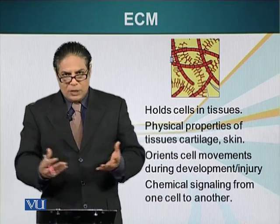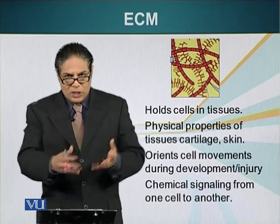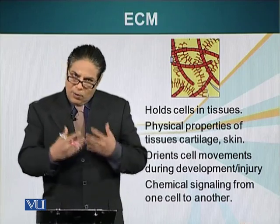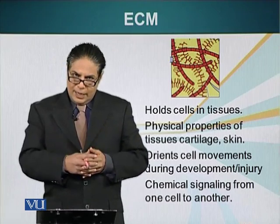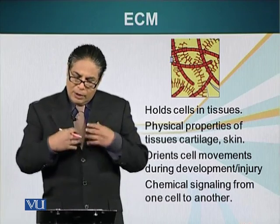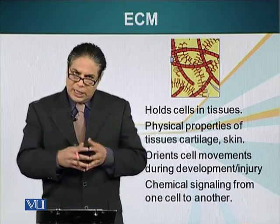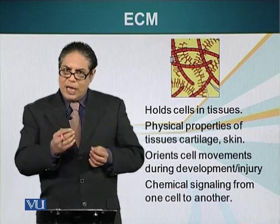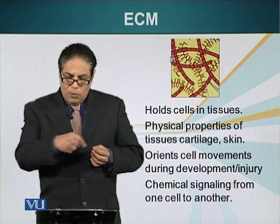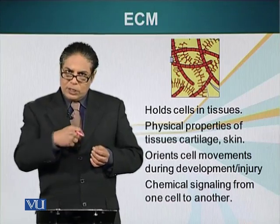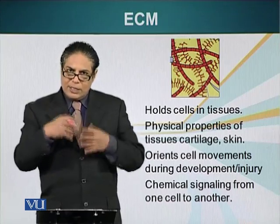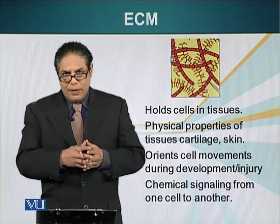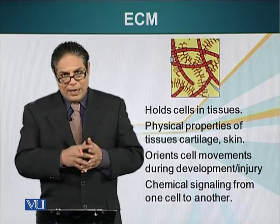This is important because, as we know, we shed our cells all the time — we are always shedding our skin, and our internal organs can also shed cells. If a liver cell, for example, dislodges and goes into the circulation and settles elsewhere and starts growing, it will be catastrophic.